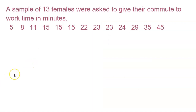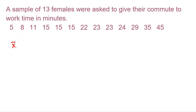Let's say we have a sample of 13 females and we ask how long it takes them to commute to work in the morning — these are their 13 times in minutes. If you were asked to find the mean, add all these values together and divide by 13. The mean — notice I'm using X-bar here because it came from a sample, not all women everywhere — should be 20.769. I like to have three significant digits after the decimal point. Don't forget units — that would be minutes.